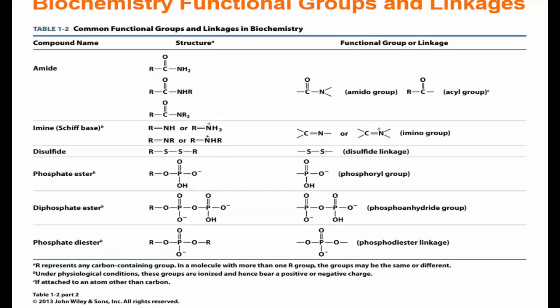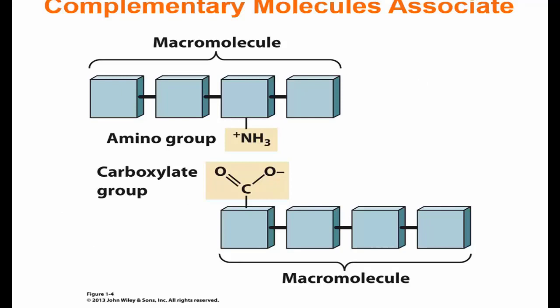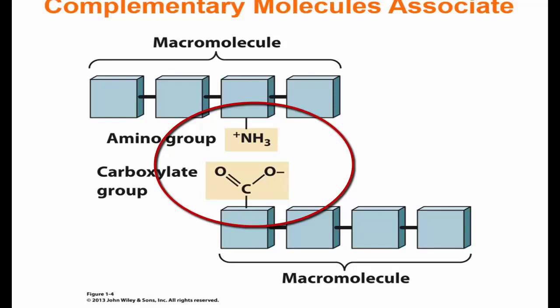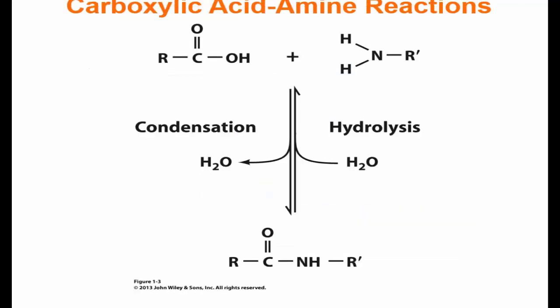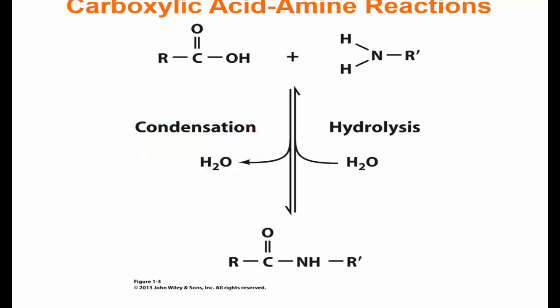These functional groups can interact with other functional groups either through covalent interactions to form linkages such as disulfide bridges, or through non-covalent interactions. Often in the cell, non-covalent interactions — such as ionic bonding of a carboxylate group and amino group from two different molecules — can cause dimerization, folding, or polymerization, as we saw in microtubule assembly. Functional groups also provide sites for organic reactions, such as condensation reactions between a carboxylic acid and an amine to remove a water molecule and covalently link two molecules together.